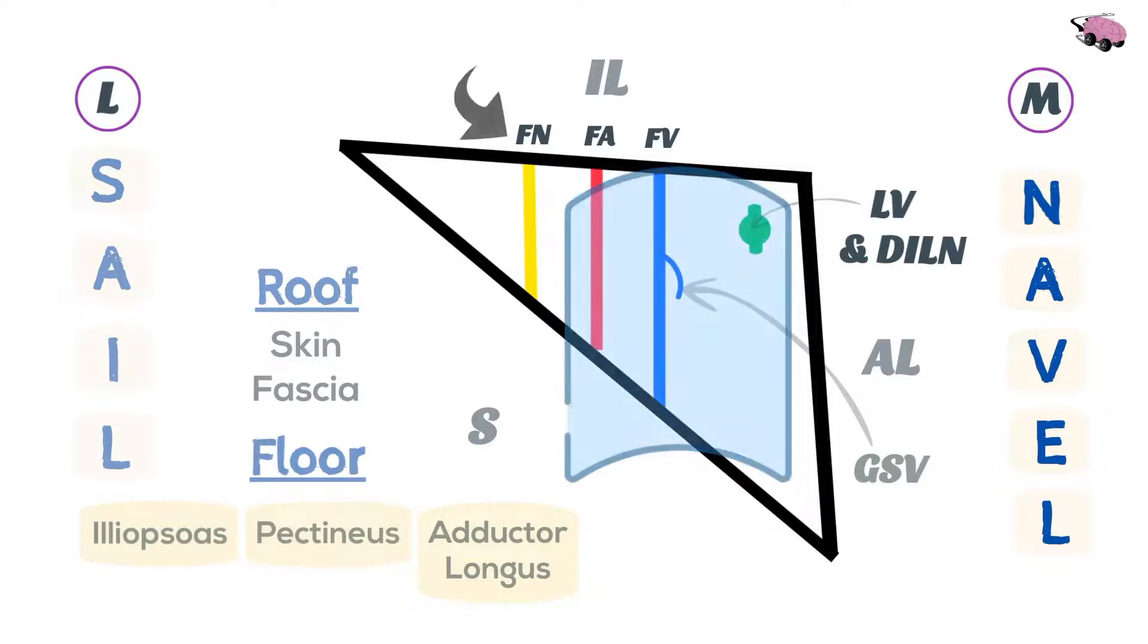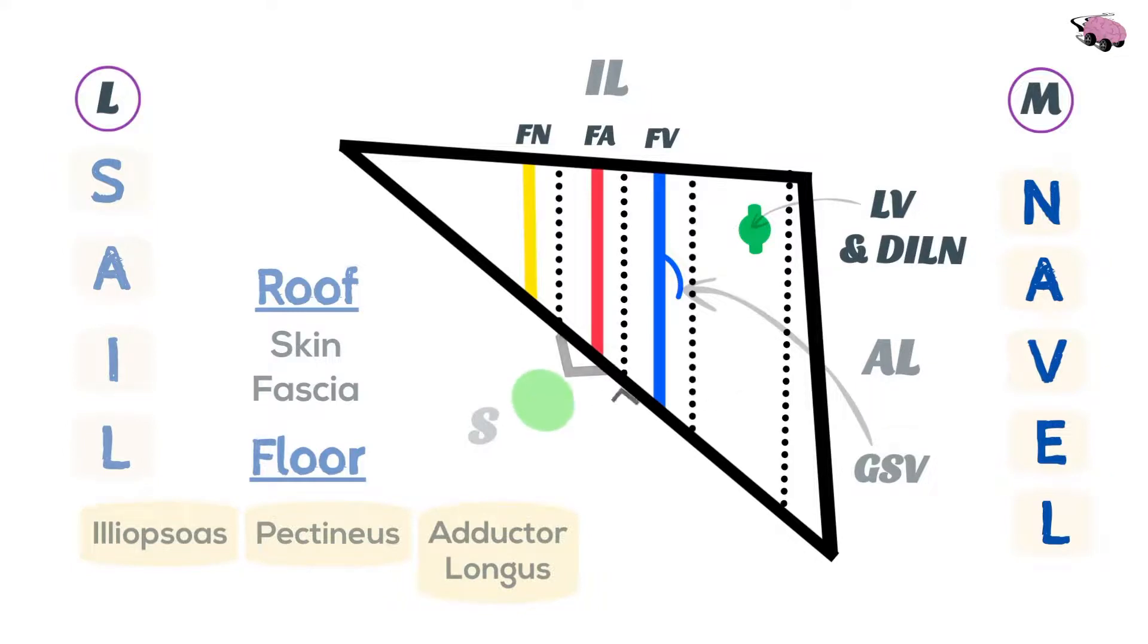Now the femoral sheath is divided into three parts: the lateral compartment, middle compartment, and medial compartment. The most medial compartment is important. It forms a canal called the femoral canal.